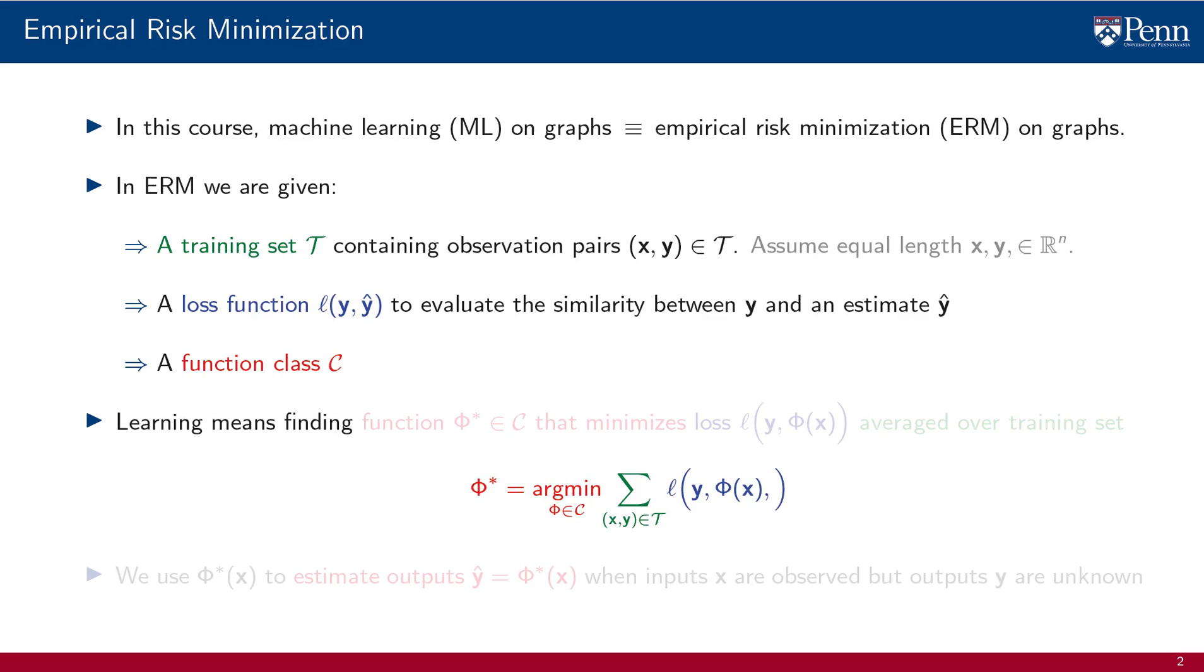A machine learning problem entails finding a function phi star in the class function C that minimizes the loss between the observed output y and the output phi of x predicted by function phi, averaged over the elements of the training set. When we say machine learning we refer to this empirical risk optimization problem and the process of finding the function phi star in the class C is the process of training.